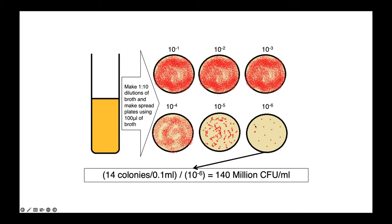So here on 10 to the negative 6, we have 14 colonies. So by doing some math, taking into consideration how much of our broth we plated onto this agar, and how diluted that broth was from the initial sample, we can back calculate to determine that there were 140 million CFUs per ml in our initial sample.